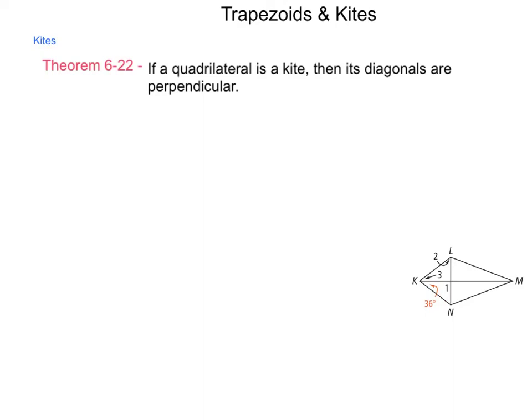In the figure, in kite KLMN, let's find the missing angles. Since we know we have 36 degrees at angle NKM, and angle 1 is at one of those intersections, we know right away that the measure of angle 1 is 90 degrees.